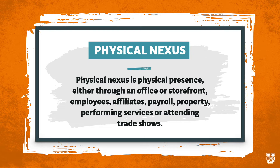There are two types of nexus: physical nexus and economic nexus. Physical nexus means you have some sort of physical presence in the state or jurisdiction. You could have physical nexus through having an office or storefront, but also through having employees in the state, affiliates working for you in the state, payroll in the state, business-owned property in the state, performing services in the state, or — and this catches a lot of people — attending trade shows, farmer's markets, or other selling events in the state. All of those things could potentially create physical nexus, and you've got to check each state's individual rules.